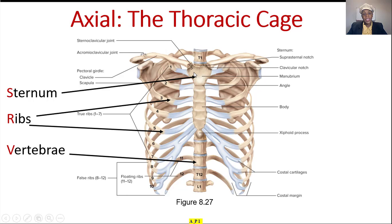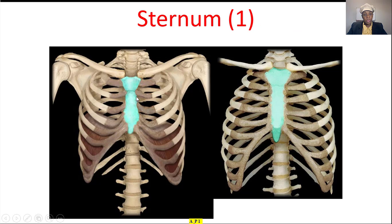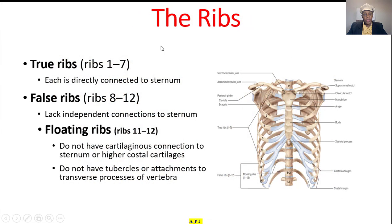Now let's talk about the thoracic cage: the sternum, the ribs, and the vertebrae. This is the sternum — looks like a tie. Then the ribs. We have true ribs — ribs one to seven — they connect directly to the sternum, that's why they're called true ribs. The false ribs lack independent connection to the sternum, so they come together to become one connection. And the floating ribs, ribs 11 and 12, do not attach to the sternum at all — they're floating.